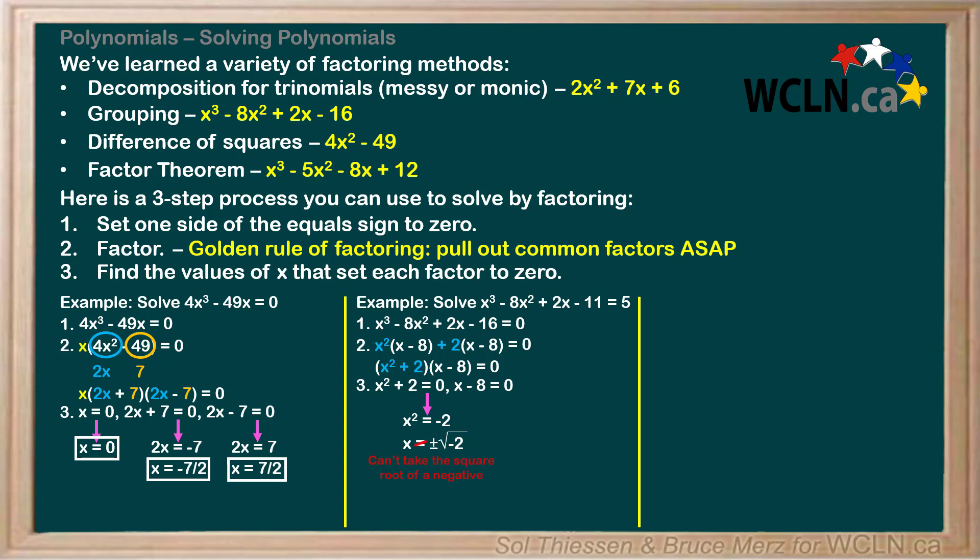This can't be a solution, since we can't take the square root of a negative. So onto the factor of x - 8, we need to add 8 to both sides to give us x = 8. This is the only real solution to our equation.